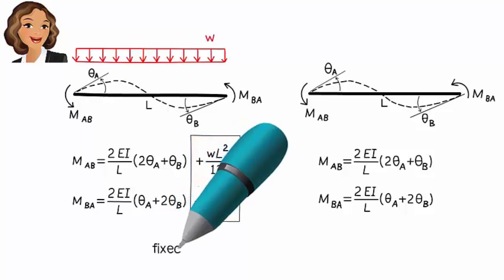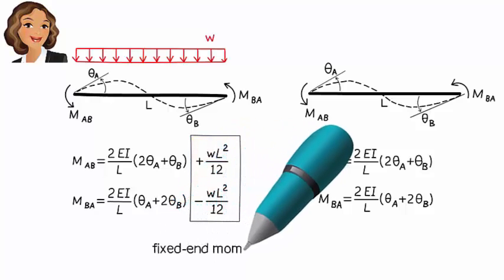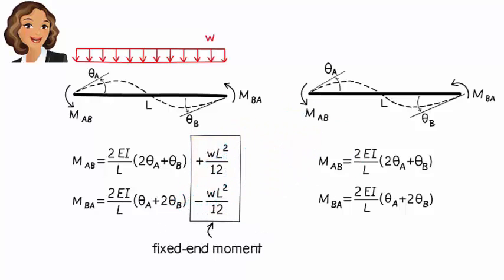We refer to these additional terms as fixed-end moments. For a uniformly distributed load, the fixed-end moments are positive WL-squared over 12 and negative WL-squared over 12.